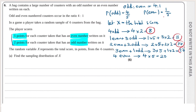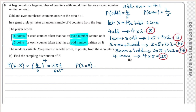Now we calculate the probability of each value. P(X=8) is the probability of all four counters being odd: (4/5)⁴ = 256/625.